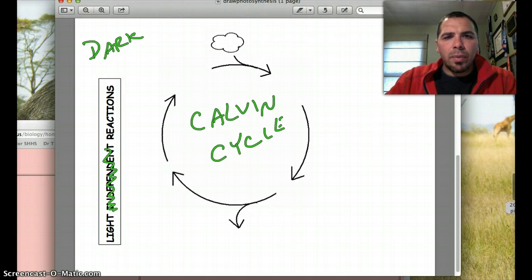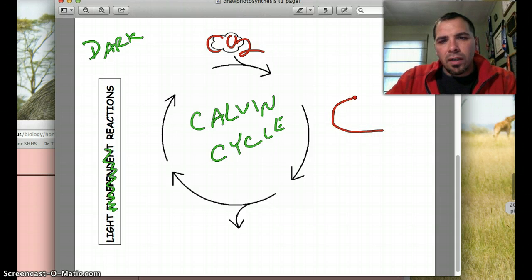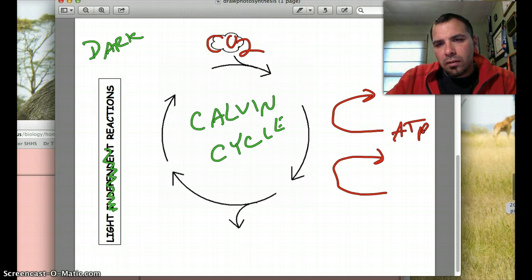So what we have up here, we have our CO2, a different color here. That comes in from the atmosphere. We had two things produced in the light reactions, which I'm going to show you here in a second. These are my arrows trying to represent them coming in and donating. We had ATP, and then we had NADPH.